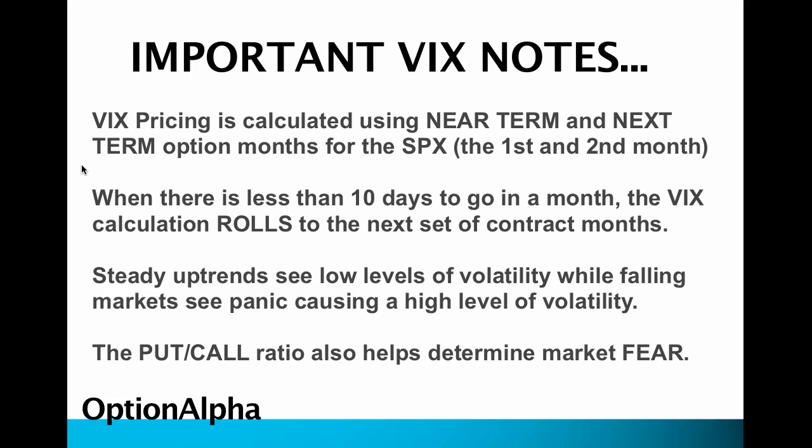What doesn't want to happen is that we don't want to count those 10 days where pricing becomes a little bit erratic and in some cases, pricing actually dries up, meaning the pricing of the options is not really realistic to what the market expectation is. That's why the VIX rolls to the next set of contract months, and it's important to understand that the VIX is always a moving indicator, always looking at the next two months out.